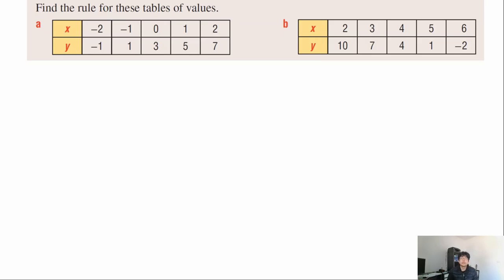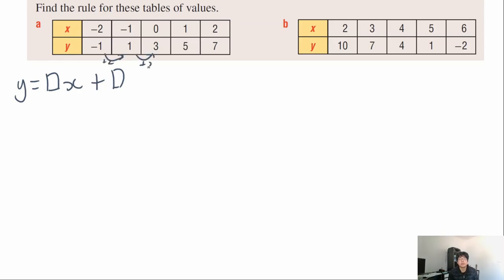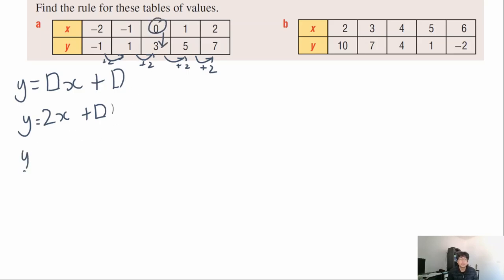Pause the video here and have a go at this one by yourself, then unpause when you're ready. The general format is y equals coefficient of x plus a constant. Finding the coefficient: y is adding two each time x goes up by one — negative 1 plus 2 is 1, 1 plus 2 is 3, and so on — so the coefficient is two. The x equals zero value is in the table and the y value there is three, so the equation is y equals 2x plus 3.